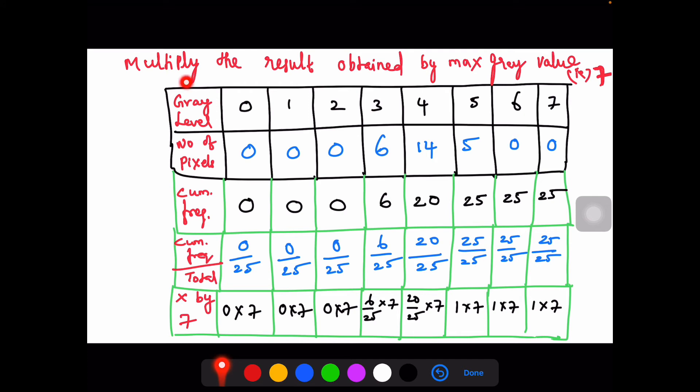Finally, multiply the result we obtained in the previous step by the maximum gray value, that is 7 for this problem. We are going to multiply this term by 7, similarly continue multiplying the previous values with 7.